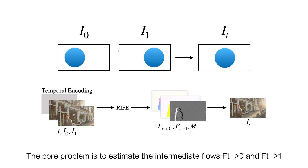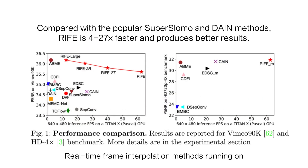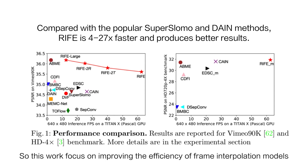The core problem is to estimate the intermediate flows FT20 and FT21. Real-time frame interpolation methods running on high-resolution videos have many potential applications. So this work focuses on improving the efficiency of frame interpolation methods.